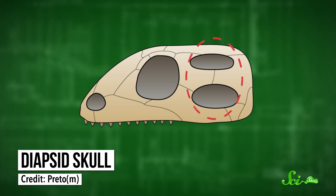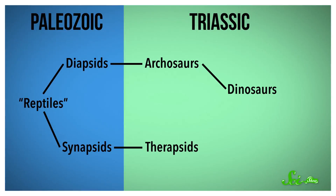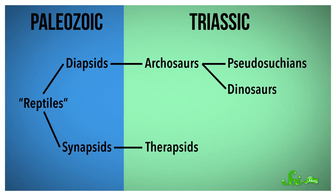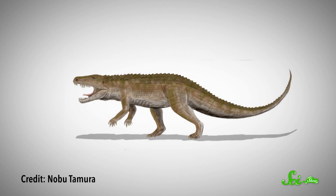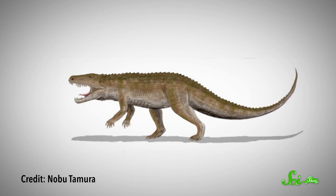Diapsids have two openings behind their eyes. Archosaurs have two extra openings — one in front of the eye and one in the lower jaw. Dinosaurs are archosaurs, but so is another group that almost took over instead of the dinosaurs: the Pseudosuchians, which evolved very similar body plans to dinosaurs that came later, including standing on two legs. They came in a lot of different shapes and sizes, but picture something a bit like a crocodile — but about 12 times more terrifying — able to stand up straight on its long legs and run really fast over land.